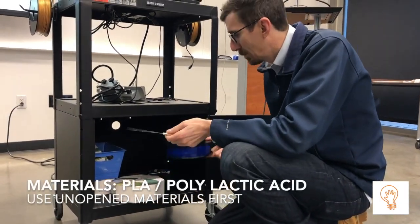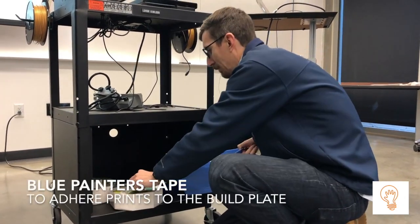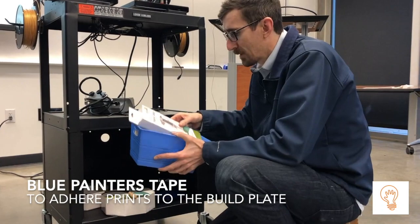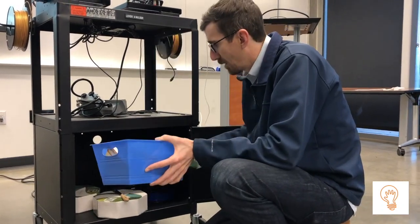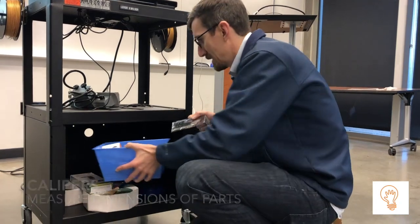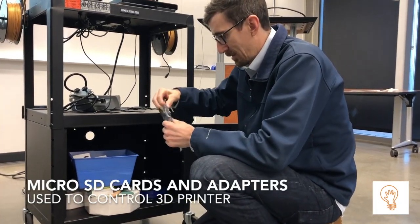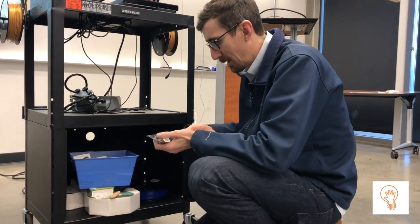Typically you'll find a scraper tool to get your parts off the platform, 3D printer filament (it's better to use already open filament), calipers to measure your parts, and USB adapters for the SD card.